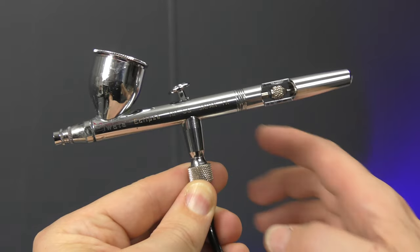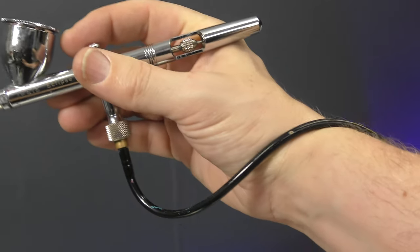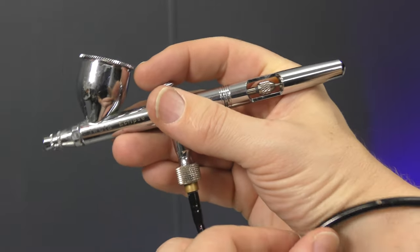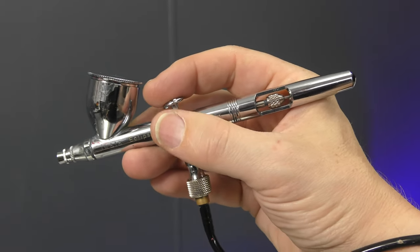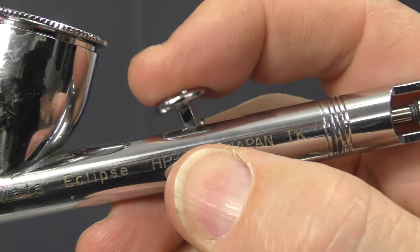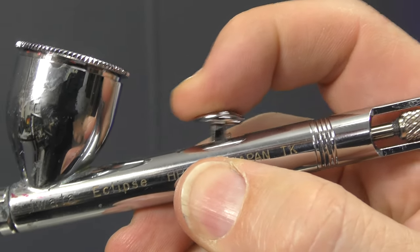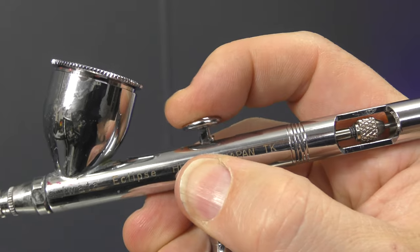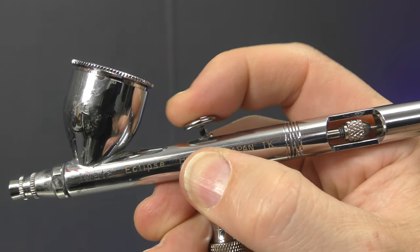So the first thing I like to do when I'm airbrushing is wrap the hose around my wrist. This just prevents a bit of that drag and in my opinion makes it more comfortable. You can airbrush with your finger right on the end of the trigger and just pull back like that. That'll work perfectly for you and I did that for many years.